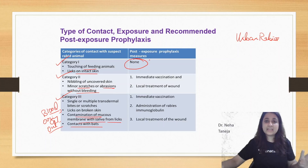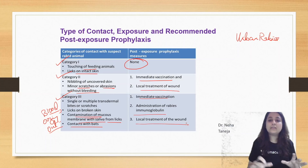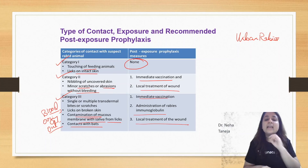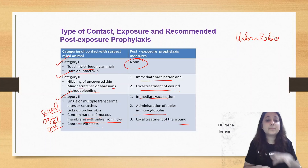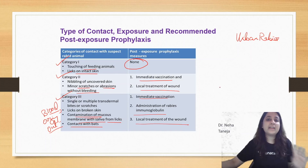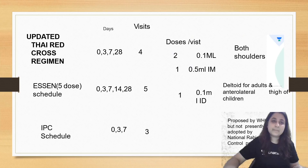Based on the category, for post-exposure prophylaxis: if it's a category one bite, nothing has to be done. If it's a category two bite, immediate vaccination and local treatment of the wound. If it's a category three bite, immediate vaccination plus rabies immunoglobulin along with local treatment. Local treatment means putting the wound under running water for at least 10 to 15 minutes so the virus cannot attach to nerve endings. You are not going to suture any of the wounds — if suturing is required, delay it for 24 to 48 hours.